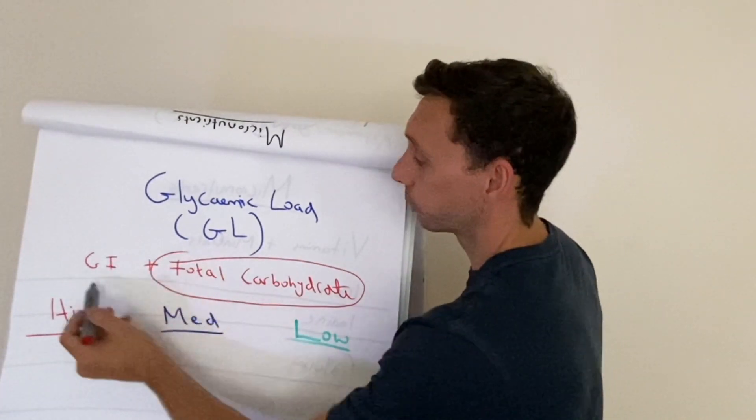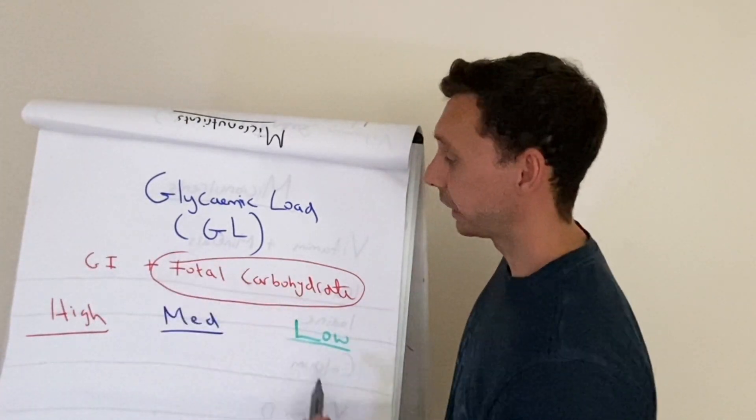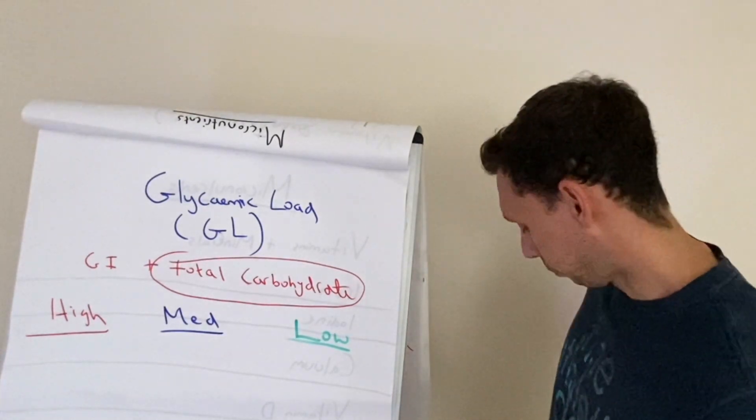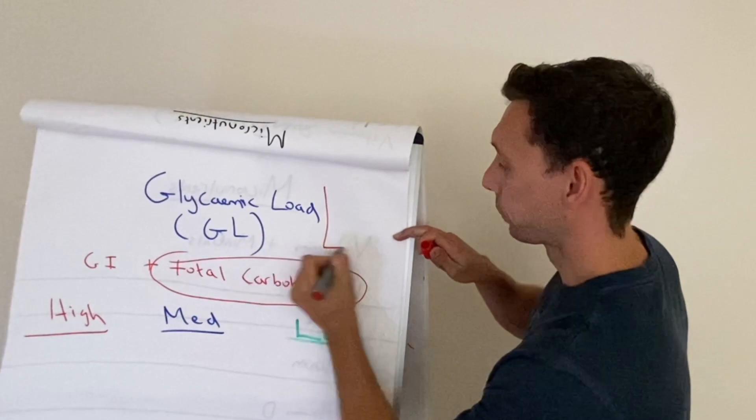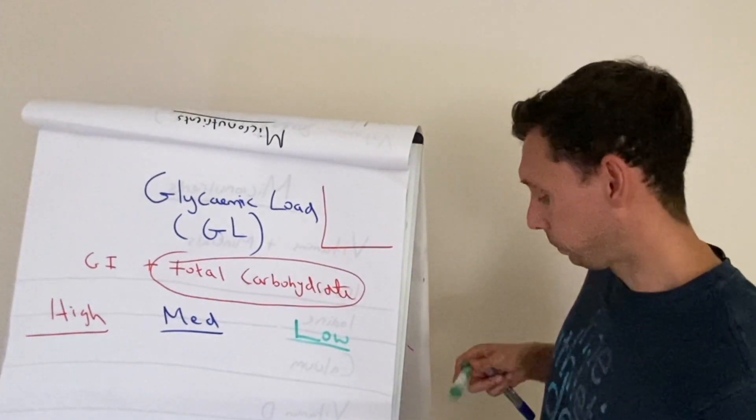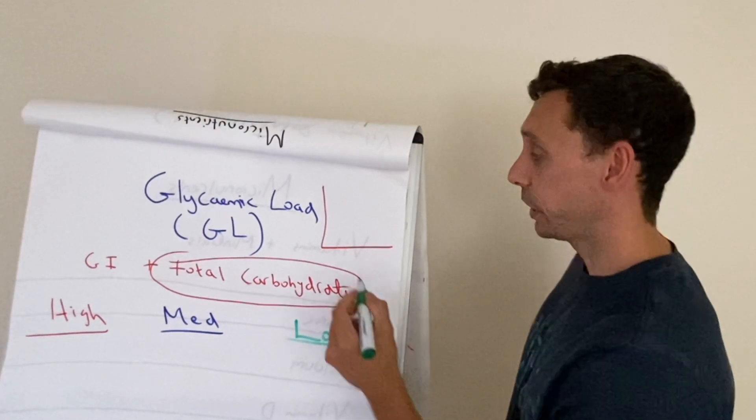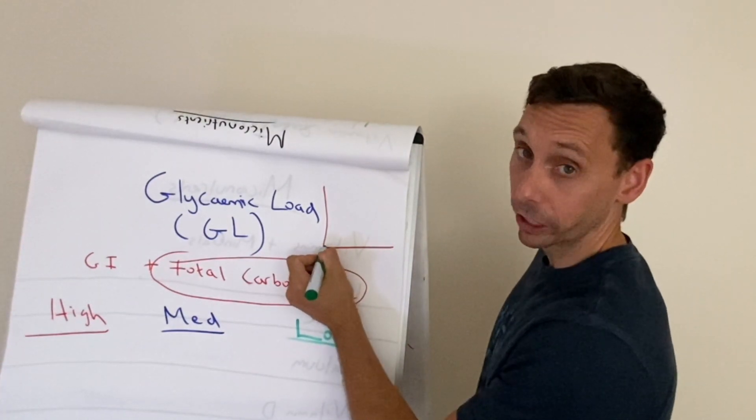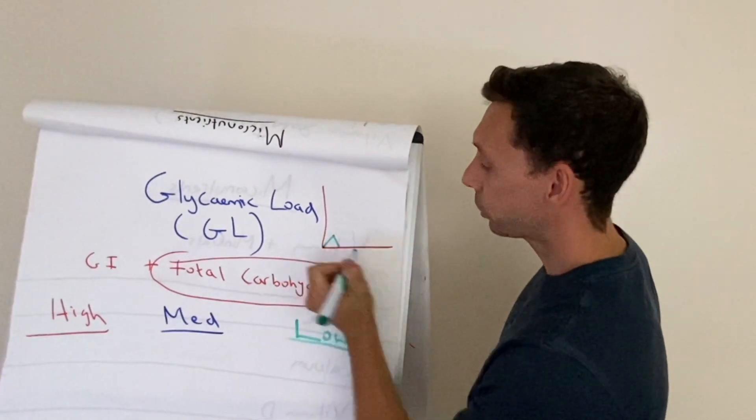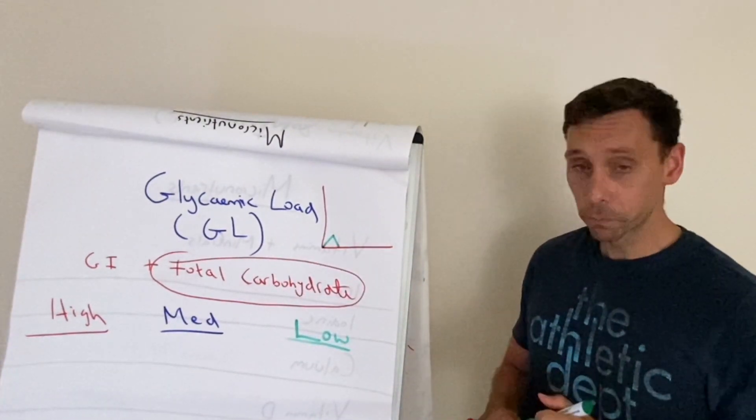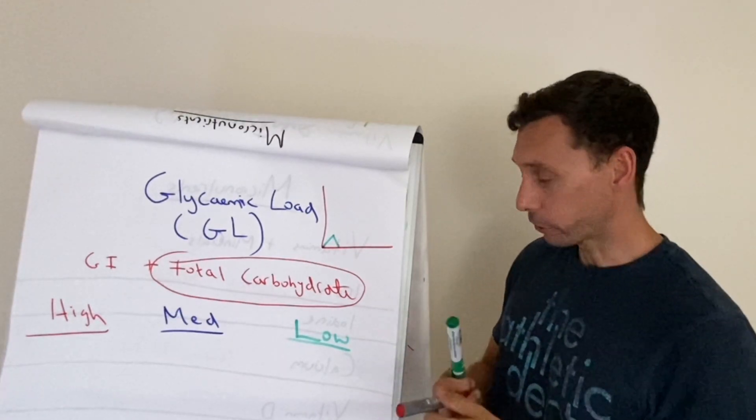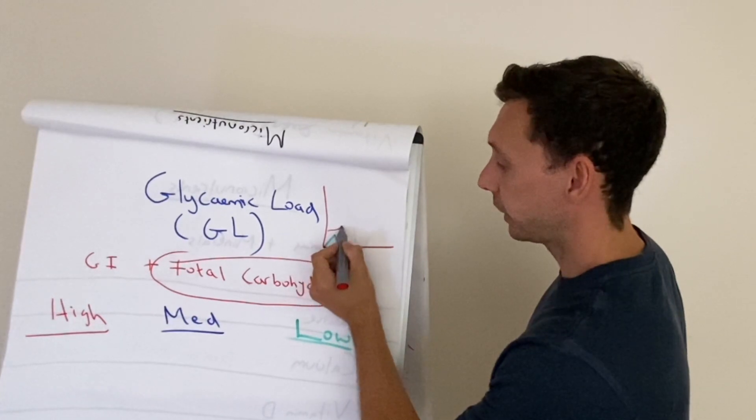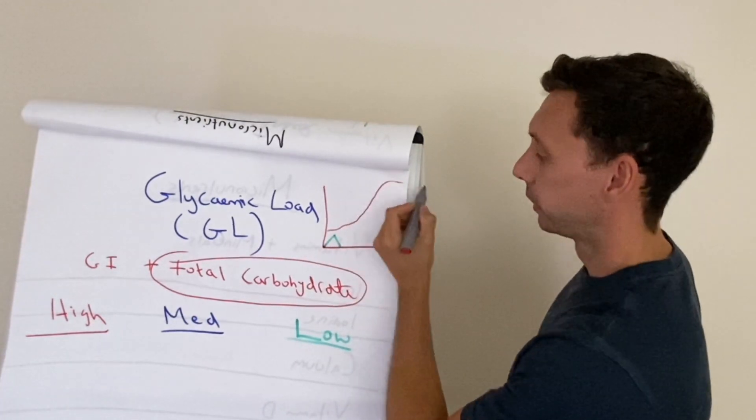So when we start to do this and we start to consider how much carbohydrate is in it, then it starts to look like more than we would expect. For example, returning to our watermelon and chocolate example: watermelon is high GI, no doubt about it, but there's only three grams of carbohydrate per 100 grams, it's three percent carbs. So you just get a tiny little blip, it gets in quick but it barely registers. Whereas chocolate has a lot of carbohydrate, a lot of sugar, so although it's slow to get in, when it does, up we go.